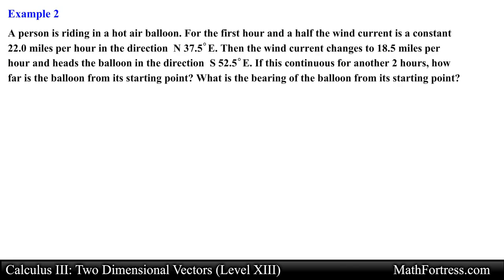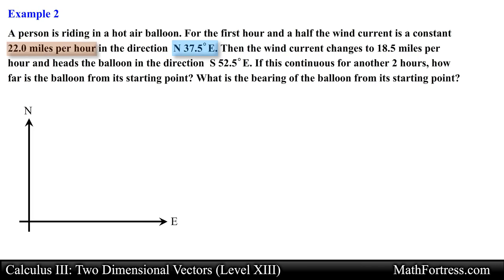A person is riding in a hot air balloon. For the first hour and a half, the wind current is a constant 22 miles per hour in the direction 37.5 degrees east of north. Then the wind current changes to 18.5 miles per hour heading the balloon in the direction 52.5 degrees east of south, and this continues for another 2 hours. How far is the balloon from its starting point and what is the bearing from its starting point? Let's first draw a diagram. We start with the first bearing: 37.5 degrees east from north.